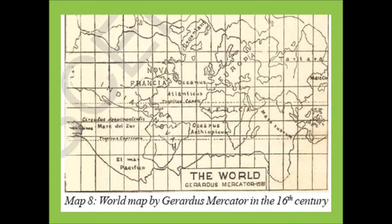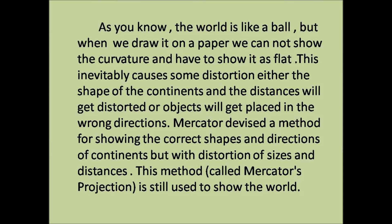This is the world map made by Gerardus Mercator in the 16th century. As you know, the world is like a ball, but when we draw it on paper we cannot show the curvature and have to show it as flat. This inevitably causes some distortion — either the shapes of the continents and distances get distorted, or objects get placed in the wrong directions. Mercator devised a method for showing the correct shapes and distances.